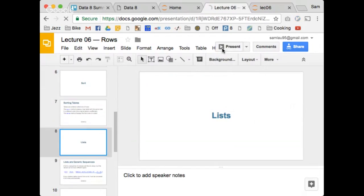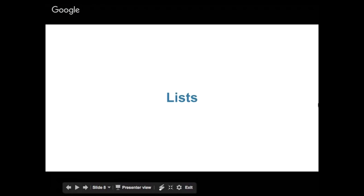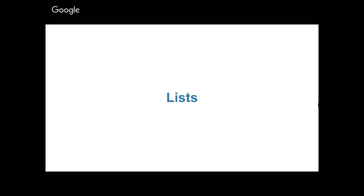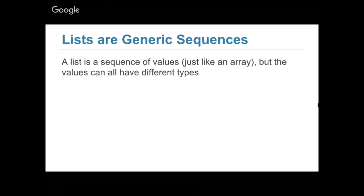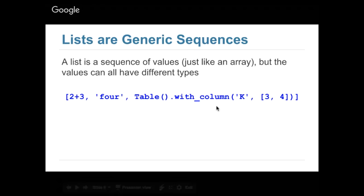Let's move on to lists. As we covered before, arrays need to contain the same type of thing — if an array contains ints, all elements need to be integers; if strings, all strings. Lists, on the other hand, don't need to have all the same type. They can have anything — it's a sequence of values that doesn't require each value to be the same type. For example, I can have an integer 5, the string '4', and even a table inside the list.